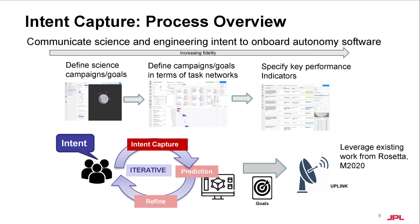Let's zoom in on the intent capture process. In our work, intent is captured and organized as science campaigns — that is, a coordinated set of observations that address a particular set of science objectives. We define a campaign as a set of goals, key performance indicators, and goal priorities. To capture science campaigns, we consider different perspectives, for example scientists and engineers, and develop different tools to allow them to express their intent. Specifically, we provide a tool for scientists and instrument teams to define campaigns, a tool for mission planners and engineers to define their goals in terms of test networks, and a tool for specifying how the system should check and monitor key performance indicators.